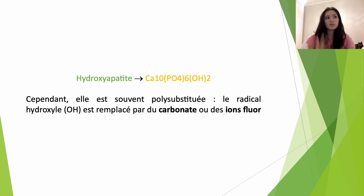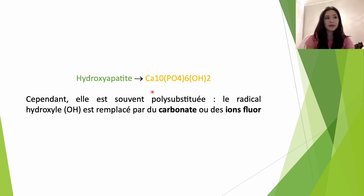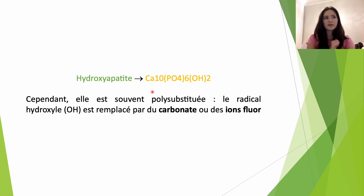Petit point sur l'hydroxyapatite. La maille élémentaire de l'émail, c'est de l'hydroxyapatite, de formule Ca10(PO4)6(OH)2, formule très importante à retenir. Cependant, on dit qu'elle est souvent polysubstituée : un radical hydroxyle va souvent être remplacé soit par du carbonate, soit par des ions fluor. Les ions fluor, qu'on retrouve dans les dentifrices, vont substituer un ion phosphate pour créer des fluorures de calcium et conférer à la dent une résistance accrue à l'attaque acide, prévenant ainsi la formation des caries.